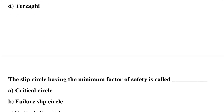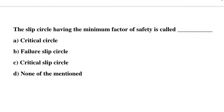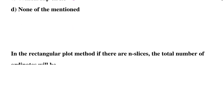Next question: the slip circle having the minimum factor of safety is called — Option A: critical circle, Option B: failure slip circle, Option C: critical slip circle, Option D: none of the mentioned. The correct answer is Option C, critical slip circle.